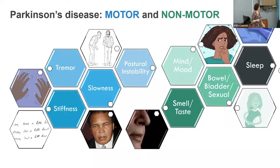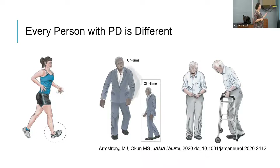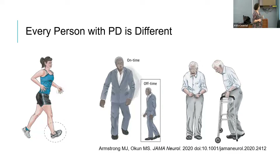Every person with Parkinson's disease is different, and I cannot stress this enough. This diagram from a recently published paper shows the classic image of a Parkinson's patient, but also a younger patient with dystonia where the foot turns in, or a regular-looking person who's on medication looking normal — and when off, showing cardinal symptoms. When you go to a support group or the clinic, it's really important to recognize that every person is different. This is a complicated disease.